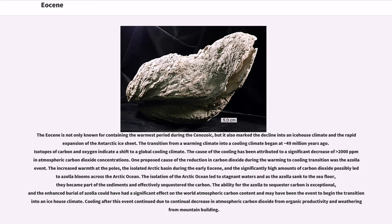The Eocene is not only known for containing the warmest period during the Cenozoic, but it also marked the decline into an ice-house climate and the rapid expansion of the Antarctic ice sheet. The transition from a warming climate into a cooling climate began at 49 million years ago. Isotopes of carbon and oxygen indicate a shift to a global cooling climate. The cause of the cooling has been attributed to a significant decrease of greater than 2,000 ppm in atmospheric carbon dioxide concentrations. One proposed cause of the reduction in carbon dioxide during the warming-to-cooling transition was the Azolla event. The increased warmth at the poles, the isolated Arctic basin during the early Eocene, and the significantly high amounts of carbon dioxide possibly led to Azolla blooms across the Arctic Ocean. The isolation of the Arctic Ocean led to stagnant waters, and as the Azolla sank to the seafloor, they became part of the sediments and effectively sequestered the carbon. The ability for the Azolla to sequester carbon is exceptional, and the enhanced burial of Azolla could have had a significant effect on the world atmospheric carbon content and may have been the event to begin the transition into an ice-house climate.